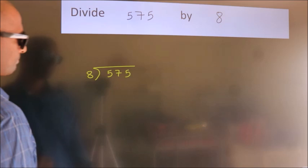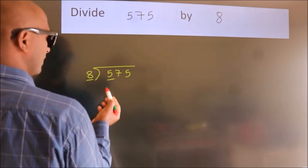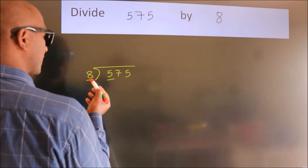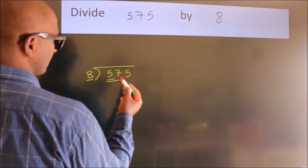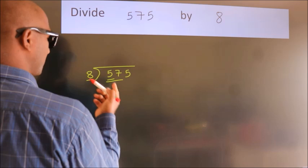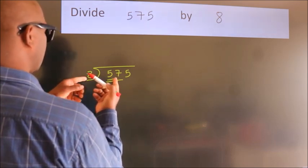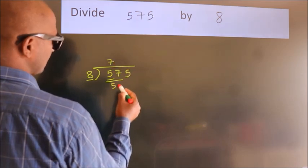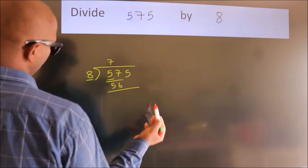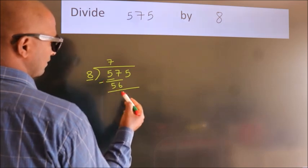Next, here we have 5, here 8. 5 is smaller than 8, so we should take 2 numbers: 57. A number close to 57 in the 8 table is 8 times 7, which is 56. Now, we subtract and get 1.